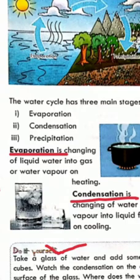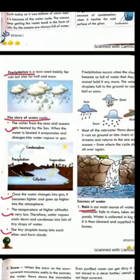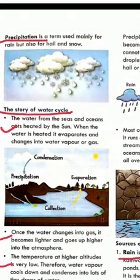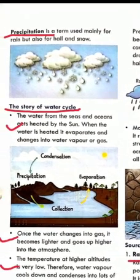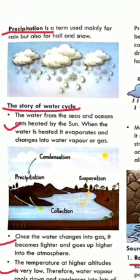The third stage is precipitation. Precipitation is a term used mainly for rain, but also for hail and snow. When the evaporated gas rises to the sky and forms thick clouds, and those clouds fill with water, some water comes down to the earth in the form of hail, snow, or rain — this is called precipitation.